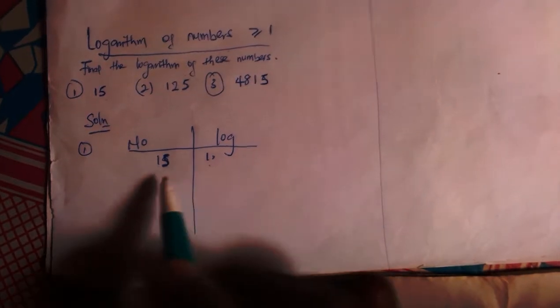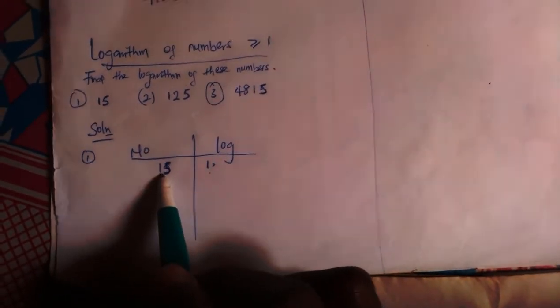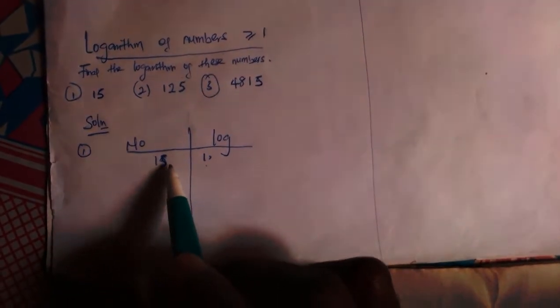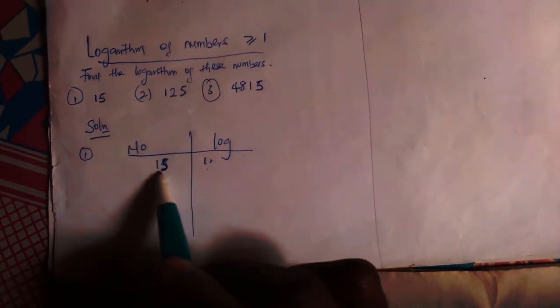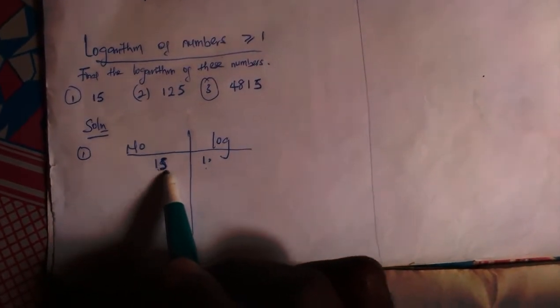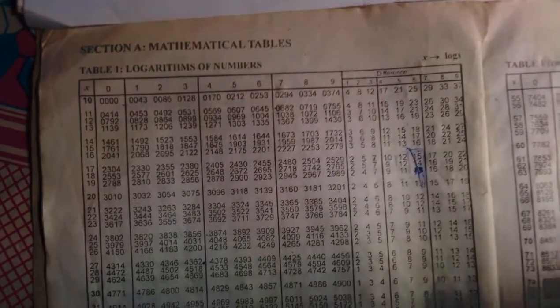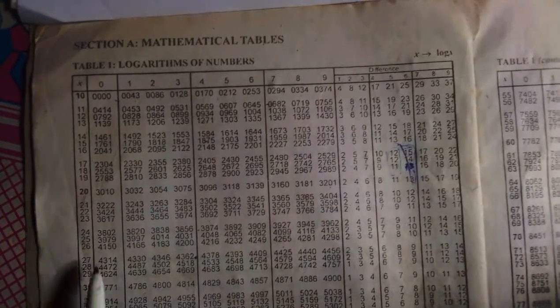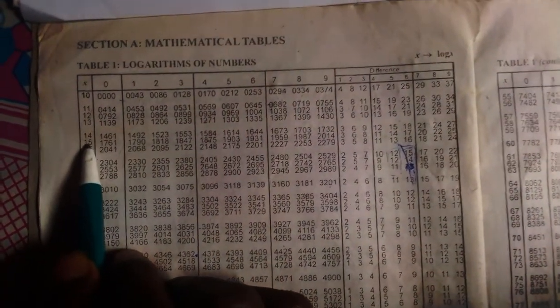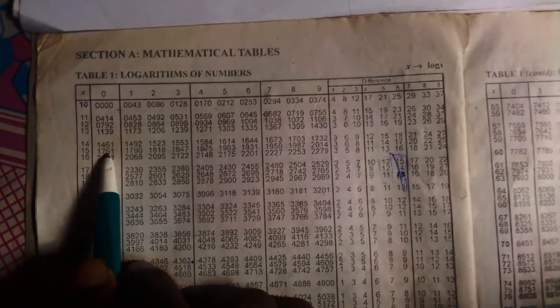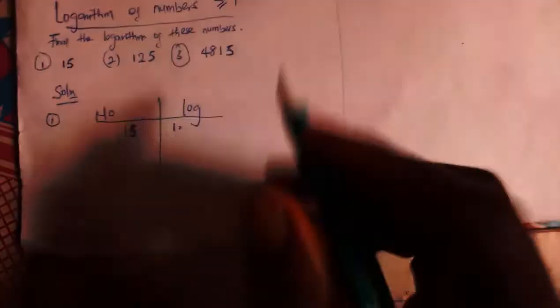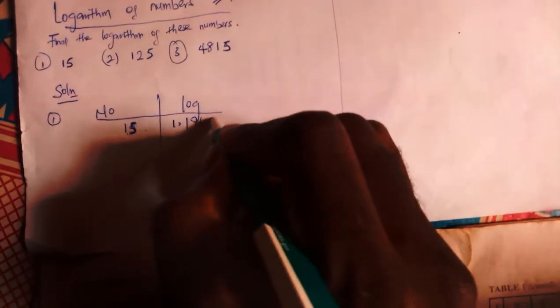Now how do I get log 15? It means you check 15 under 0. Why? Because I cannot check 1 under 5, there is no 1. So I am going to check 15 under 0 in my four-figure table. This is 15 under 0, which is 1761. So I will be putting that there, that is 1761.